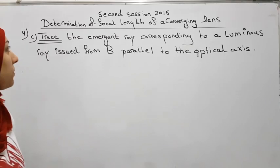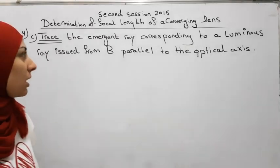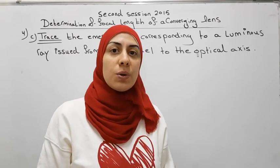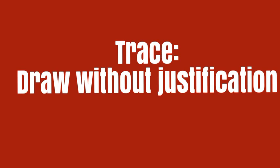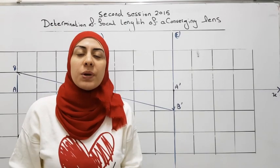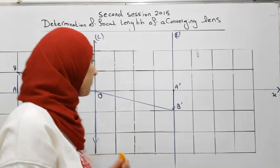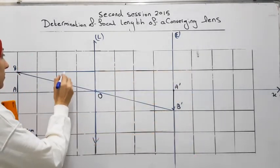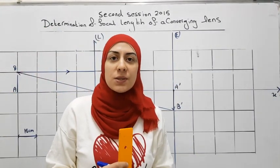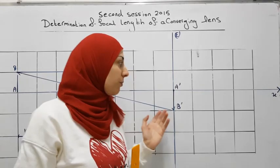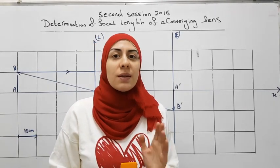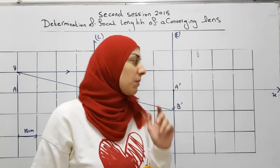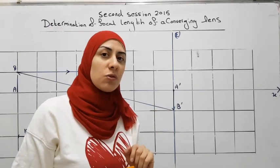In this part, we have to trace the emergent ray corresponding to a luminous ray issued from B parallel to the optical axis. Trace means that you have to draw without calculation. Let's draw the ray that is parallel to the optical axis starting from B. Any ray parallel to the optical axis continues passing through F', but we don't have F' yet. We know that any ray coming from object B continues passing through its image B', so this ray continues to the image B'.